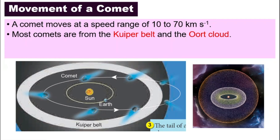Where is the Kuiper Belt and where is the Oort Cloud? The Kuiper Belt is just outside the orbit of Neptune, the furthest planet from the sun in our solar system. Outside its orbit, they find a belt called the Kuiper Belt. If you look at the diagram, this is a donut shape that is the Kuiper Belt.